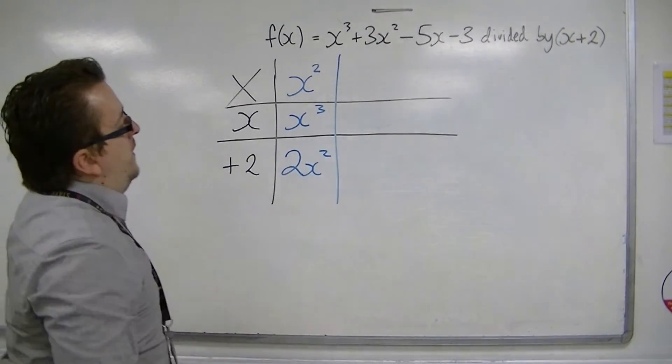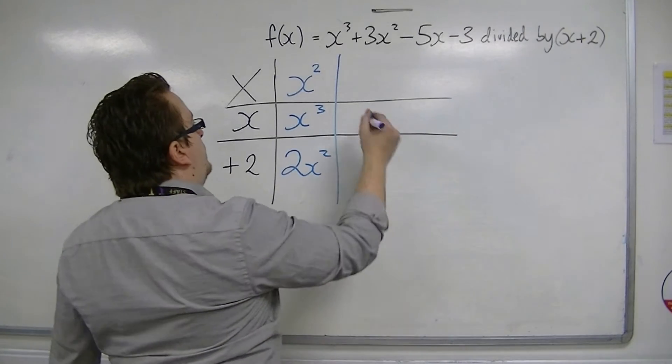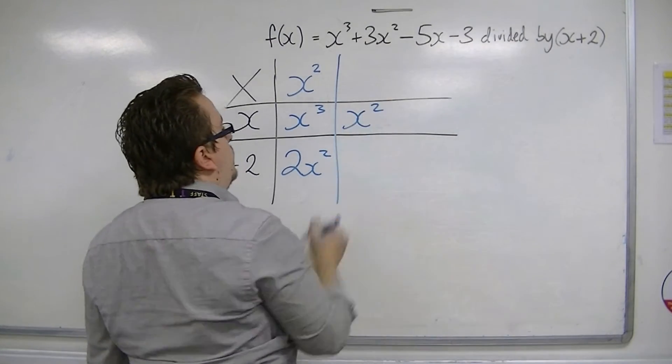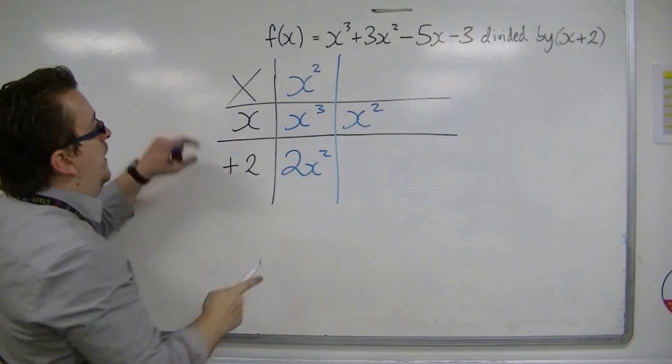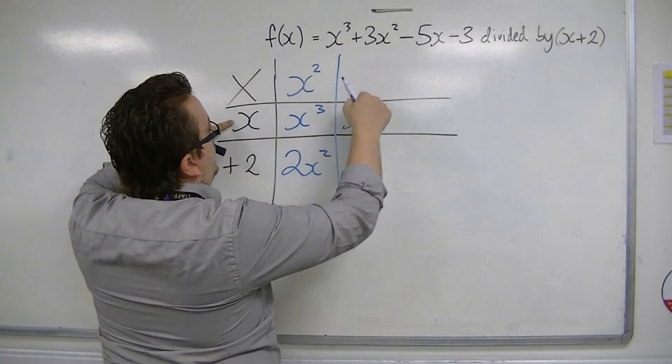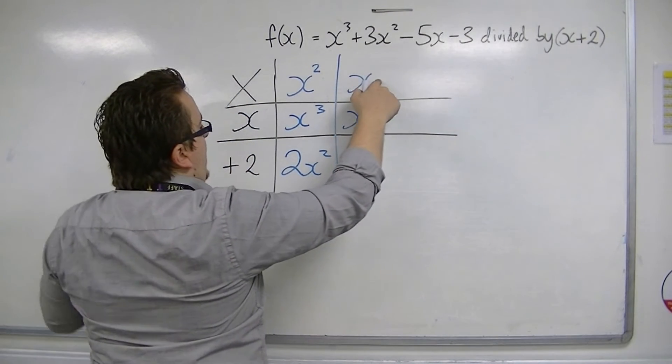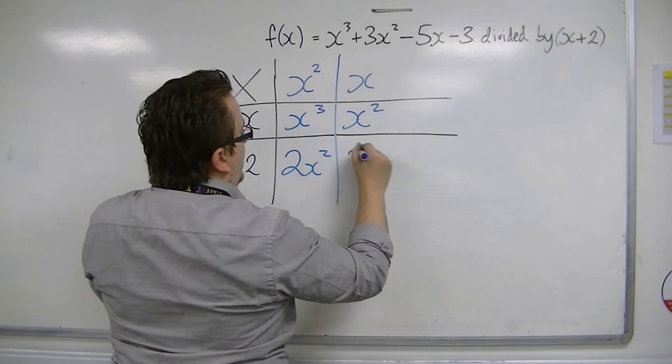Now, the only thing is that I don't have 2x squared here, I have 3x squared. So, I'm going to need another x squared. So, to get x squared, I must have x times x to get that x squared. And that x must then multiply with the 2, so I get 2x.